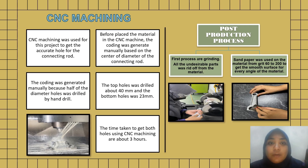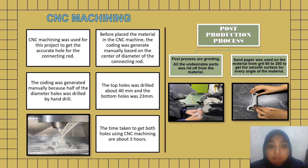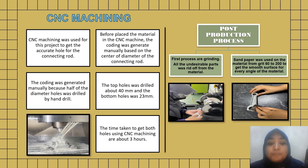The last part of the manufacturing process is CNC machining, which was used to achieve accurate holes for the connecting rod. Before placing the material in the CNC machine, the coding was generated manually based on the center of the diameter of the connecting rod, because half of the diameter holes were drilled by hand drill. The top hole was drilled to 40mm and the bottom hole to 23mm. The time taken to complete both holes using CNC machining was about 3 hours.